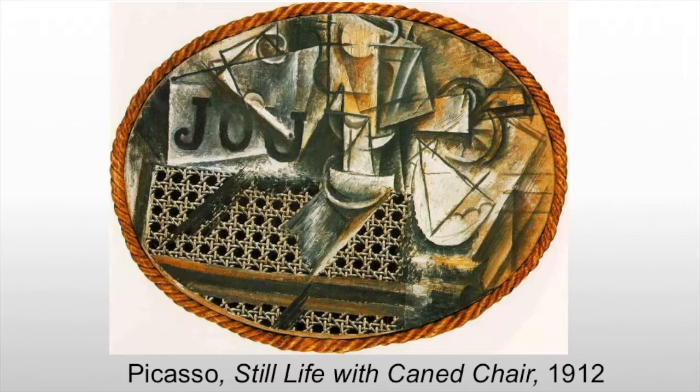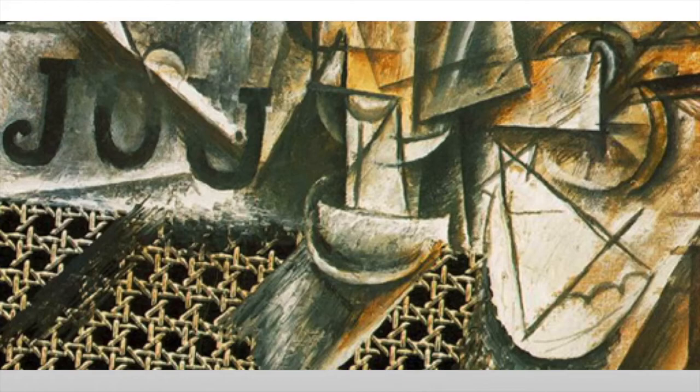That means that the realism of the cane that we see from a photograph pasted to the surface is giving us the impression that everything else must be realistic, and so we read things like this semi-circle with radiating lines as maybe a lemon quarter. And we only get that because of the realistic element of the cane chair.